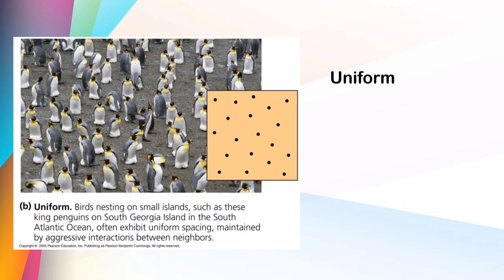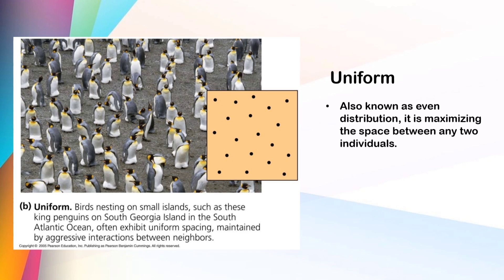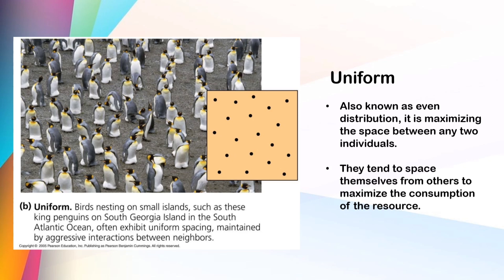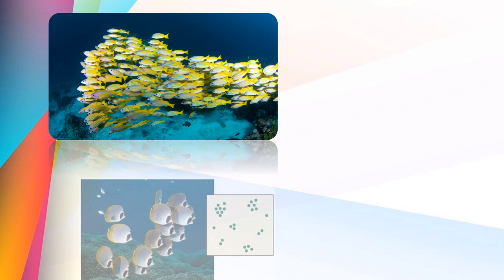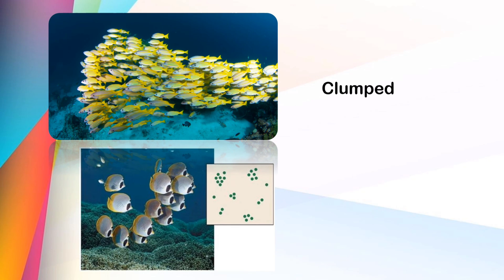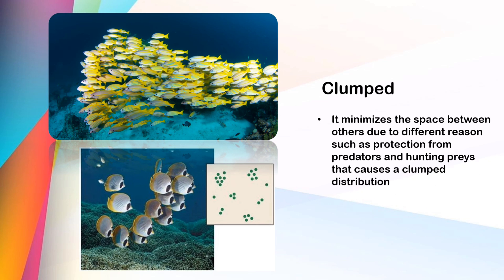Let's talk first about uniform distribution, also known as even distribution. This pattern maximizes the space between two individuals. They tend to space themselves from others to maximize the consumption of resources. Next is clump distribution — the most common pattern of distribution in nature. It minimizes the space between individuals due to different reasons, such as protection from predators. The best example is a school of fish; they use clump distribution to minimize the chance of being eaten.